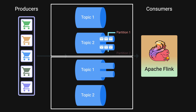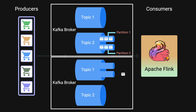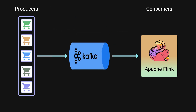Topics can be partitioned into multiple segments spread across the cluster brokers. The brokers are responsible for receiving data from producers, storing it in topics, and forwarding it to consumers, while also managing replication and partitioning for high availability and fault tolerance. Using Kafka as an intermediate layer between the data sources and Apache Flink can provide several advantages when working with distributed and real-time data processing.